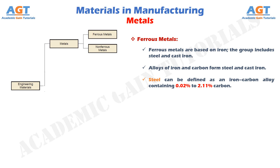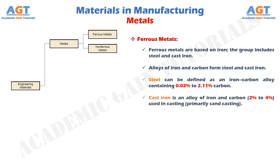Automobiles and appliances. Cast iron is an alloy of iron and carbon, 2% to 4%, used in casting, primarily sand casting. Silicon is also present in the alloy in amounts from 0.5% to 3%, and other elements are often added to obtain desirable properties in the cast part. Cast iron is available in several different forms, of which grey cast iron is the most common. Its applications include blocks and heads for internal combustion engines.